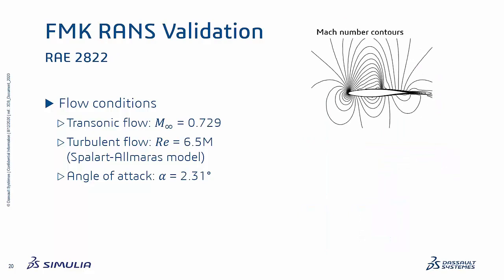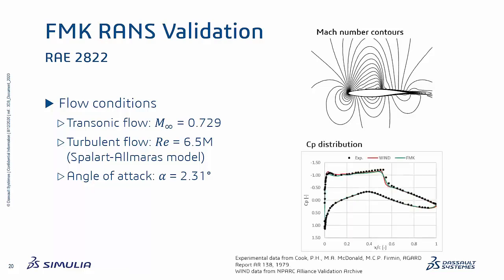Another validation case published by NASA is the supercritical airfoil RAE2822. This is a 2D simulation of a transonic turbulent flow, again comparing FMK to experiment and WIND-CFD results. WIND-CFD is an Euler/Navier-Stokes solver code developed by NASA which can model turbulent flows with one- or two-equation turbulence models, algebraic models, or RANS-LES hybrid models. Here we compare simulation results obtained with FMK to those of WIND using the one-equation Spalart-Allmaras model. Mach number contours show an aerodynamic shock on the suction side of the airfoil at around 52% of chord, followed by a shock-induced flow separation, and the pressure distribution along the chord is well captured.